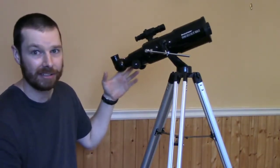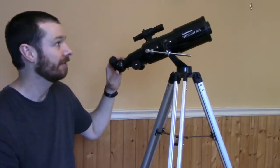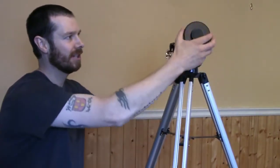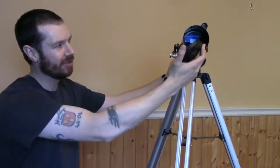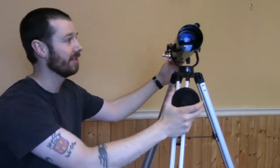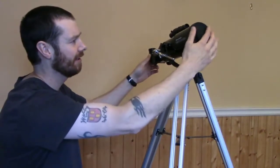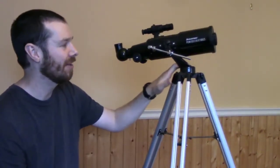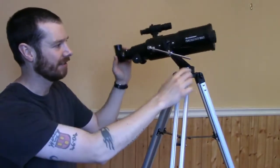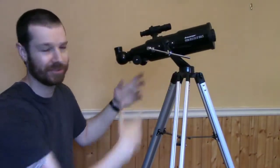So this is the Power Seeker 80 AZS, it's a refractor. It's 80 because it has an 80 millimeter aperture across the front lens. AZS is an alt-azimuth mount, so that's the style of mount that's on this, which is a very good mount for beginners.